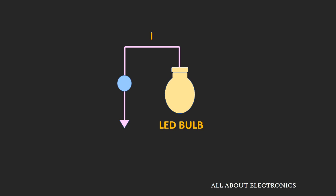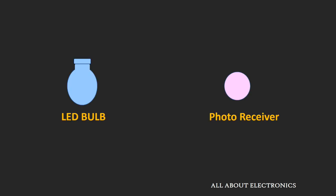If you see any LED light source, when you provide a constant current to the LED bulb, it provides constant illumination or constant brightness. As we change the current flowing through this LED bulb, the brightness will change. This principle is used for transmitting data wirelessly. If no current or minimum current is flowing through the LED bulb, the brightness will be minimum, and that will be treated as a digital 0.